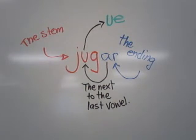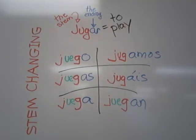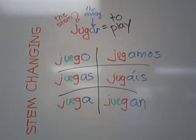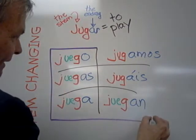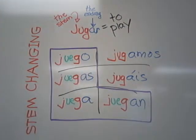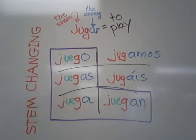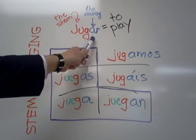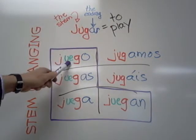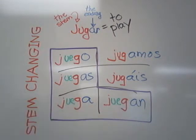And it doesn't do it in all the forms — it only does those within the boot. We have talked about the boot before. Remember when we discuss verbs, if there's any weird things that happen, it always happens within the boot or outside of the boot. With stem-changing verbs, the stem always changes within the boot. The next to the last vowel, which is U, changes to UE inside the boot, but it doesn't on the outside.